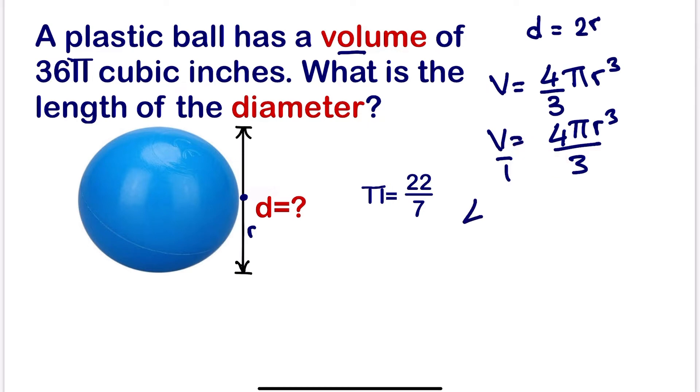This should equal 3V, 3 times V. If we cross multiply, next we can as well make r³ the subject.